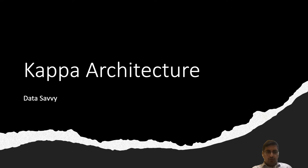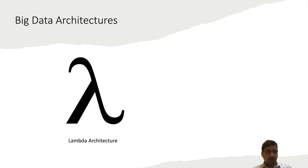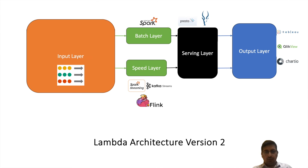Hi everyone. In today's video we are going to talk about Kappa architecture. In the Big Data world there are two very famous architectures: Lambda architecture and Kappa architecture. In a previous video we discussed Lambda architecture. Let us see a brief summary of that.